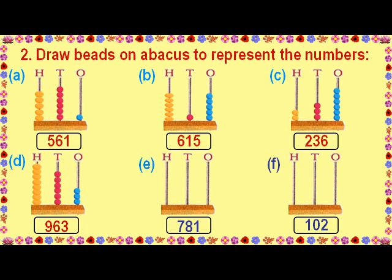Answer E: To represent seven hundred and eighty-one on the Abacus, we draw 7 beads for the hundreds place, 8 beads for the tens place, and 1 bead for the ones place. Answer F: To represent one hundred and two on the Abacus, we draw 1 bead for the hundreds place, 0 beads for the tens place, and 2 beads for the ones place.